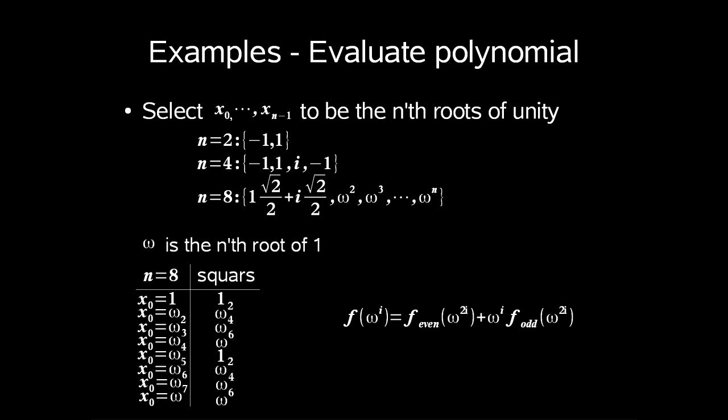From x0 to x3 is identical to x4 to x7 from these roots of unity. Our new function would be to calculate f of omega to the power of i, which is f even of omega to the power of 2i plus omega to the power of i times f odd of omega to the power of 2i.